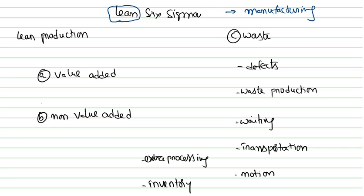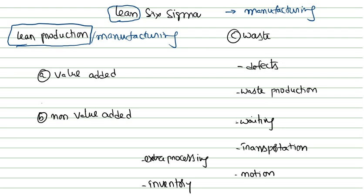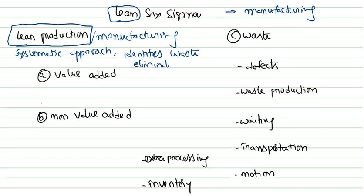When we align Six Sigma with manufacturing, we call it lean manufacturing or lean production. Lean production is a systematic approach which identifies and eliminates waste through continuous improvement by flowing the product as per the customer demand.